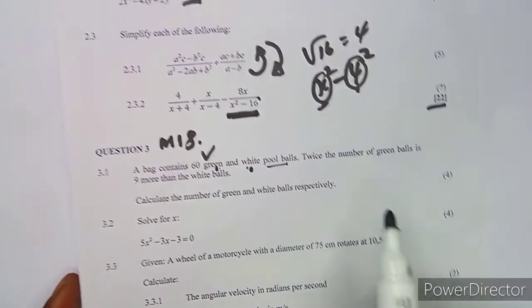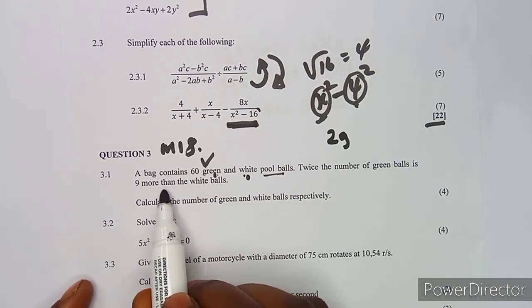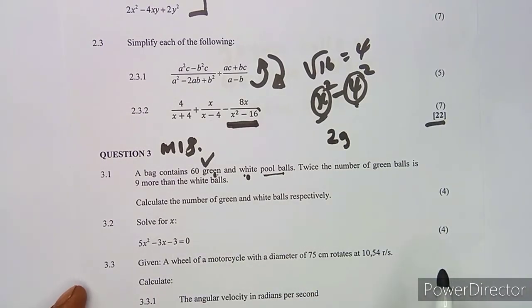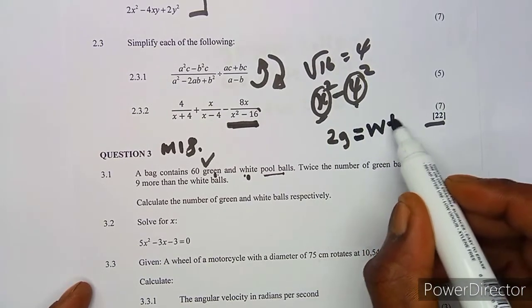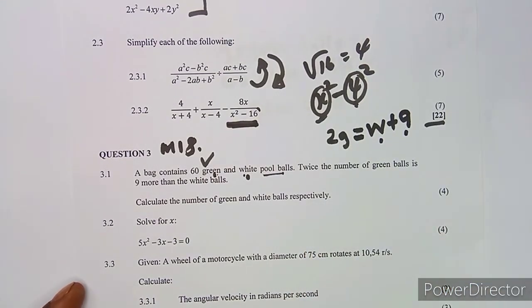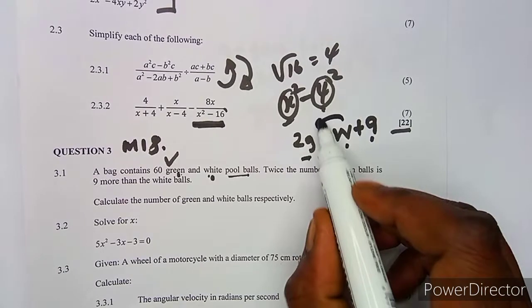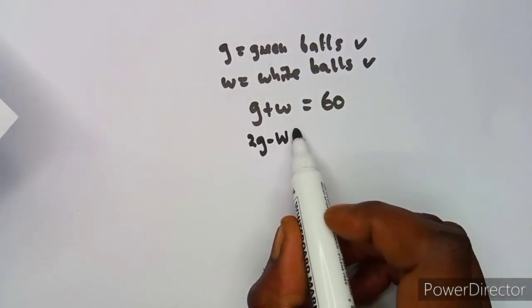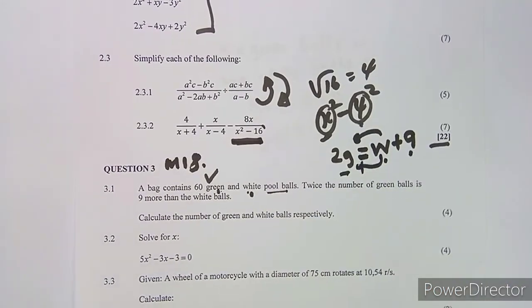Twice the number of green balls is 2g, and this is nine more than the white balls. So the white balls plus nine equals 2g. Transposing, we get the second equation: 2g − w = 9. We now have two simultaneous equations to solve.